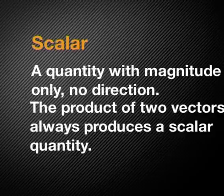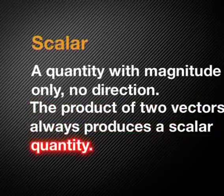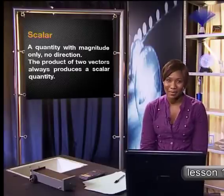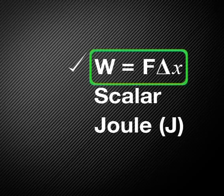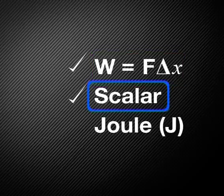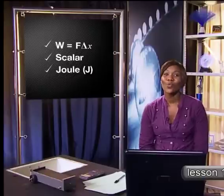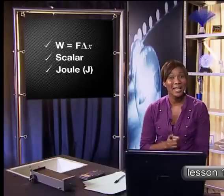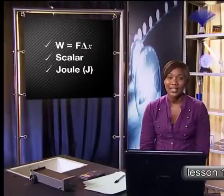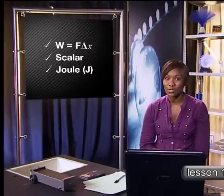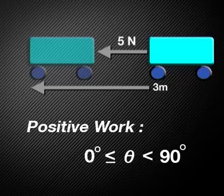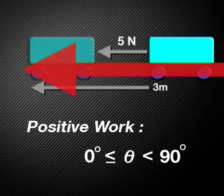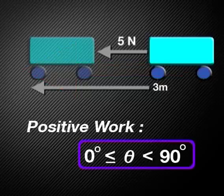Let's do a quick recap. Work is the product of two vectors — force and displacement. It is a scalar quantity and the unit of work is the joule. One joule is the work done when a force of one Newton moves an object a distance of one metre in the same direction as the force. The calculations we have looked at so far are all examples of positive work. Positive work is done when the force and displacement are in the same direction, and can be defined mathematically as work done when theta is greater than or equal to zero but less than 90 degrees.